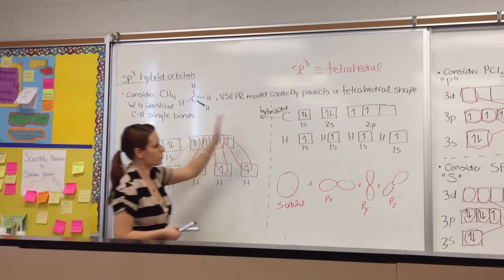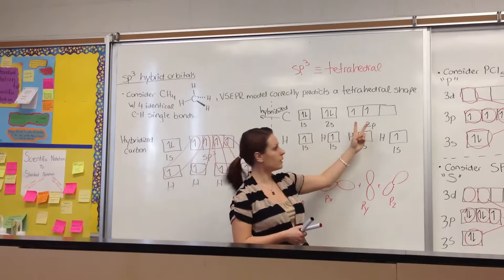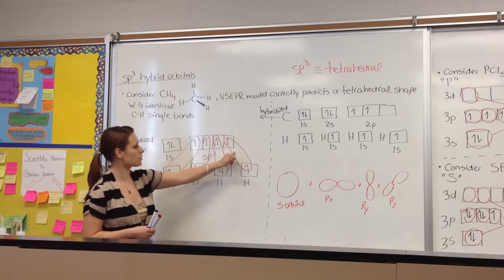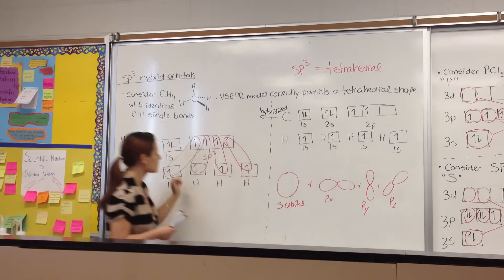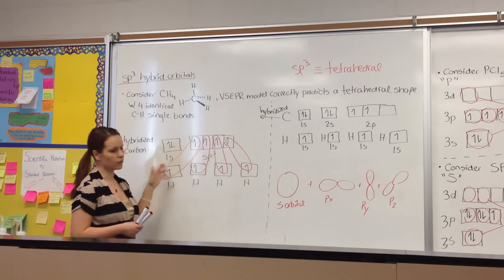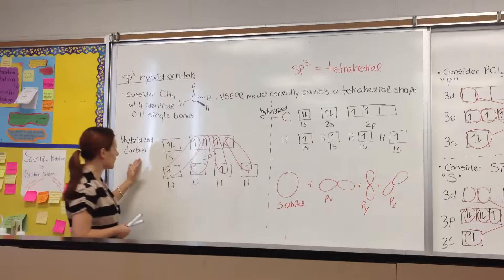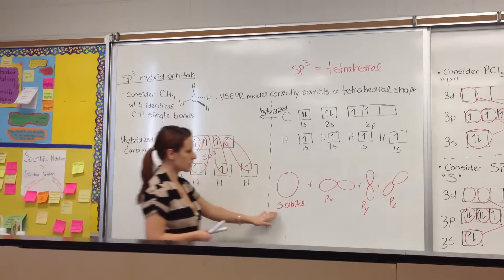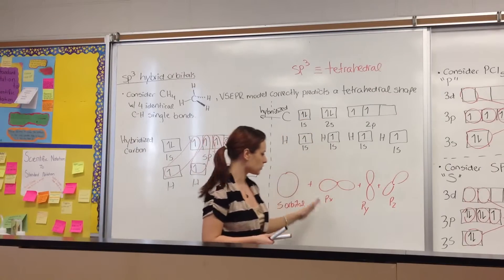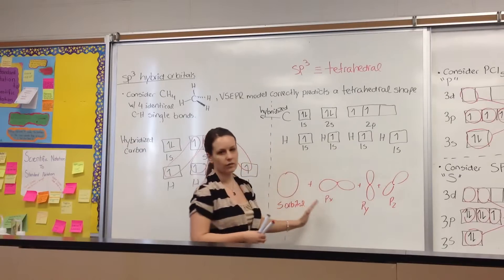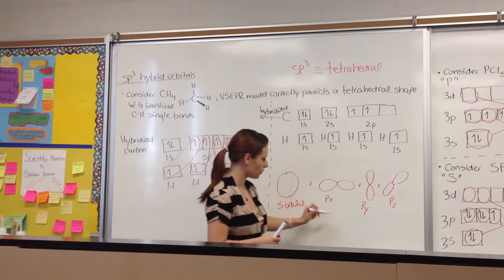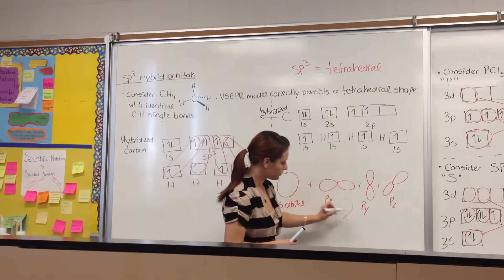We're going to combine the S and three of the P orbitals to give us four equivalent SP³ orbitals. The 2S² now unpairs, so you have four unpaired electrons, which can easily pair with each one of the hydrogens to give four equivalent bonding situations. Remember, you're only hybridizing the central atom. Visually, we are combining the S orbital and each of the three P orbitals — PX, PY, and PZ — and all four morph together to make a completely different structure: four equivalent SP³ orbitals with balloon-like shapes.